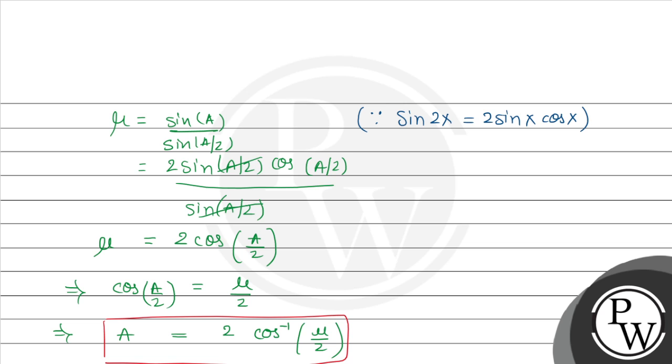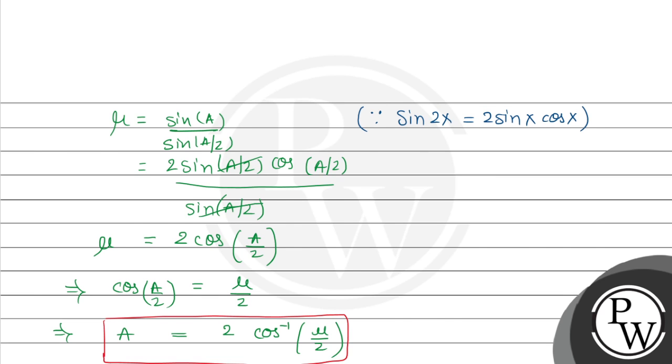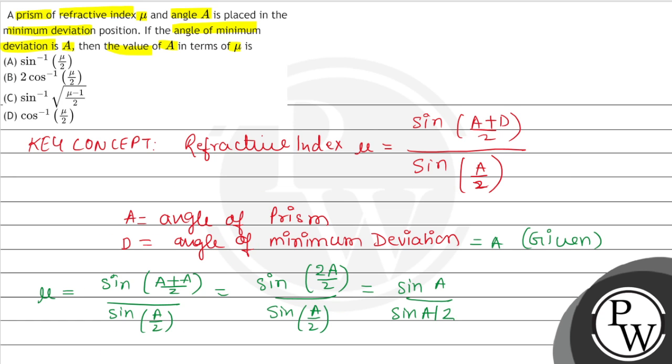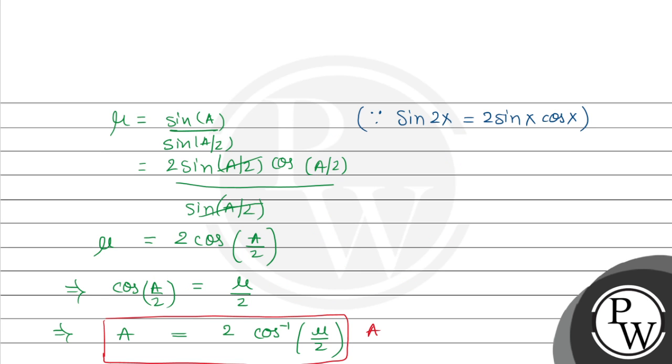This is our required relation. If we check the options, the correct option is option B: 2 cos inverse mu by 2. I hope you understood the question well. Best of luck.